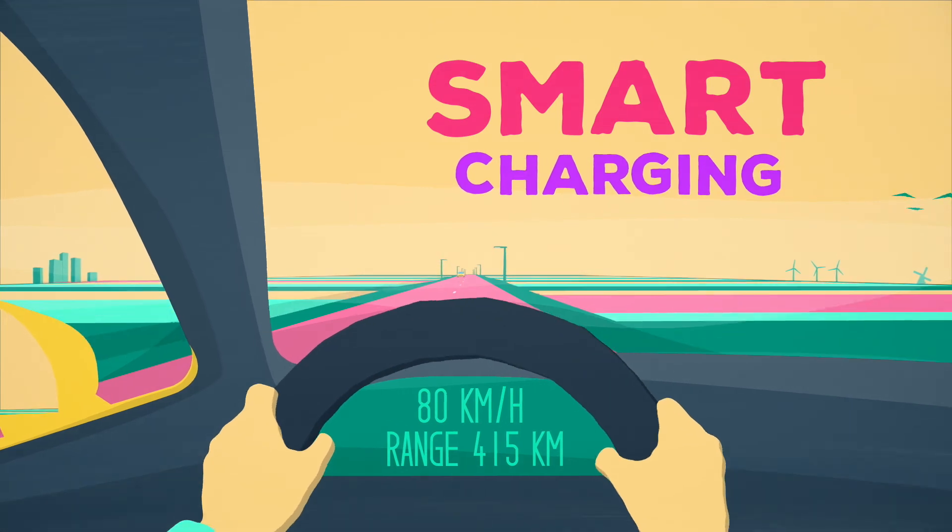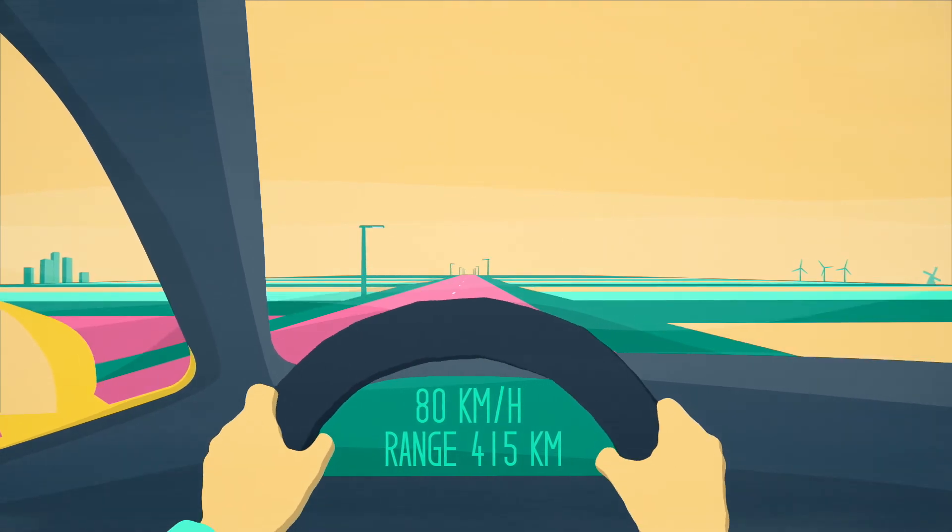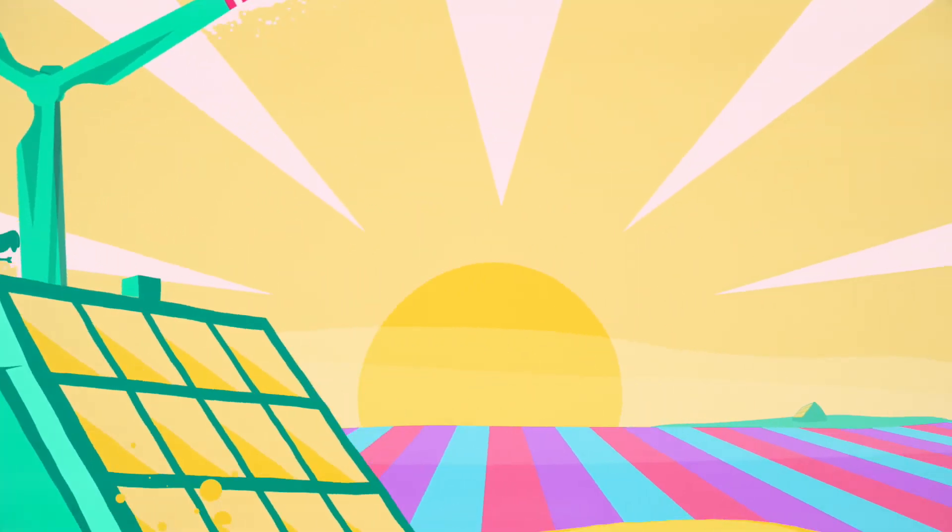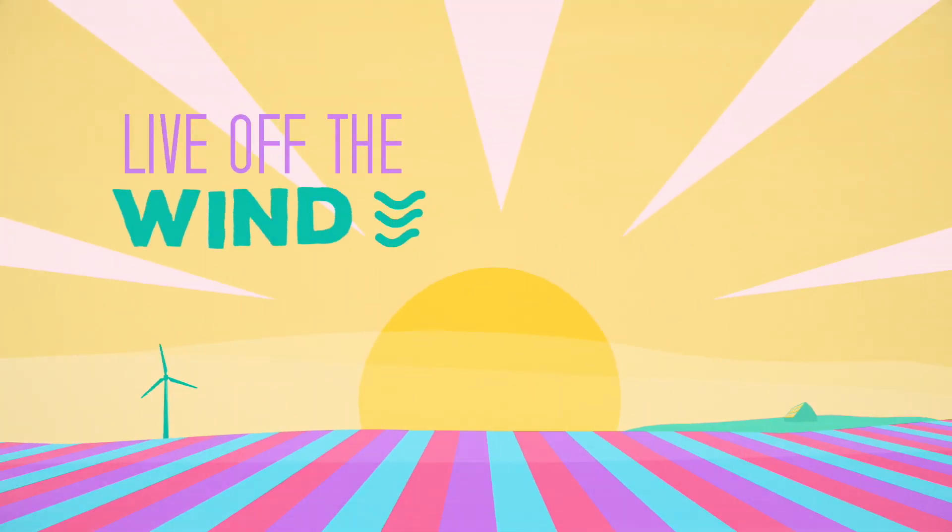With smart charging, we make sure the abundance of electricity from the sun and wind is used to charge our cars. Live off the wind and drive on the sun.